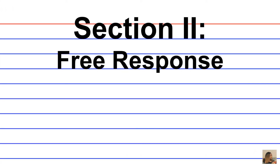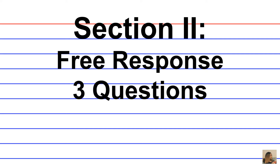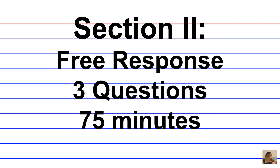Remember that Section 2 consists of free response questions. There are three questions that should be formatted as short essay answers, and you have 75 minutes to complete them, so allocate your time properly. The free response section is 50% of your exam score. You're required to define, explain, and apply geographic concepts, and also interpret geographic data.